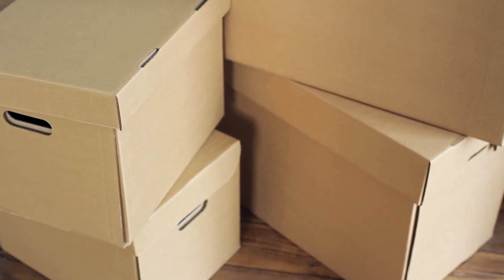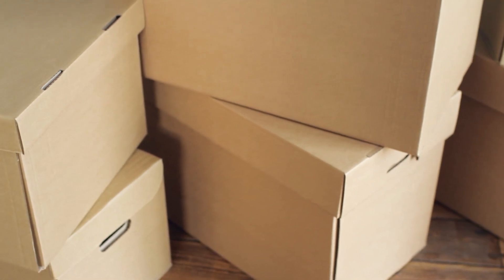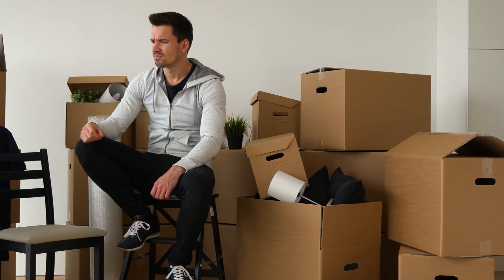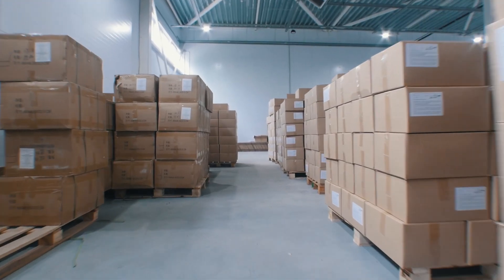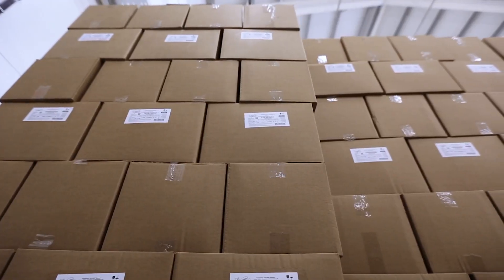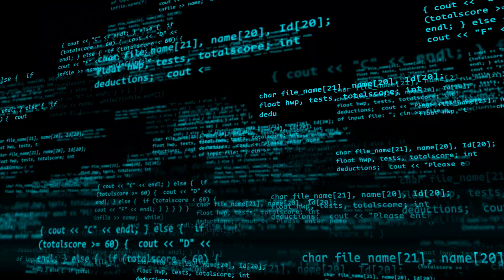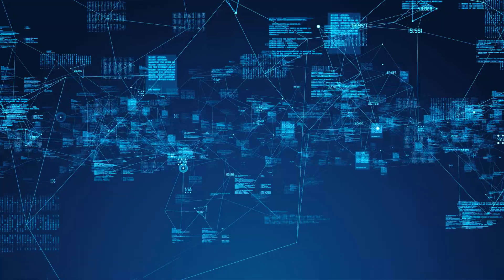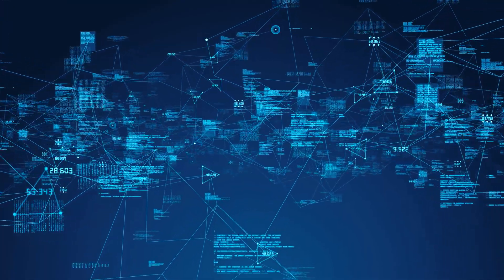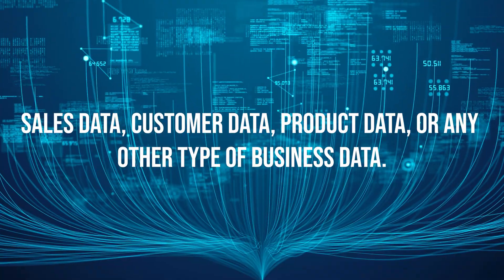If you don't know what data warehousing is, let me explain. Imagine you have different boxes filled with various items scattered all over your house — when you need to find something, it would be difficult. Now imagine you have a single warehouse where all the items are neatly stored and organized — it would be much easier to find what you need. That's essentially what a data warehouse is: a large centralized repository of data that comes from different sources like CRMs, product data, and sales data, stored in a structured way to make business decisions easier.